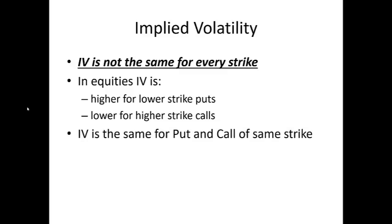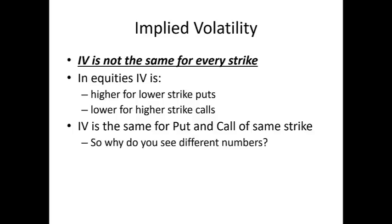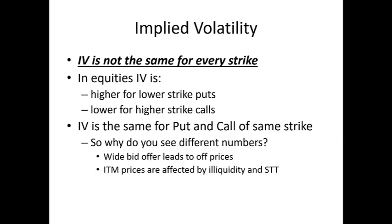Third principle: IV is the same for put and call of the same strike. You'll often see different IVs for puts and calls in option chains, but this happens due to inaccuracies in pricing in-the-money options. For example, with Nifty at 10,500, the IV of a 10,200 ITM call may differ from the 10,200 OTM put because the ITM call's bid-offer spread is wide, causing price inaccuracies. Also, when an option goes in the money it starts factoring in STT, which further affects pricing.